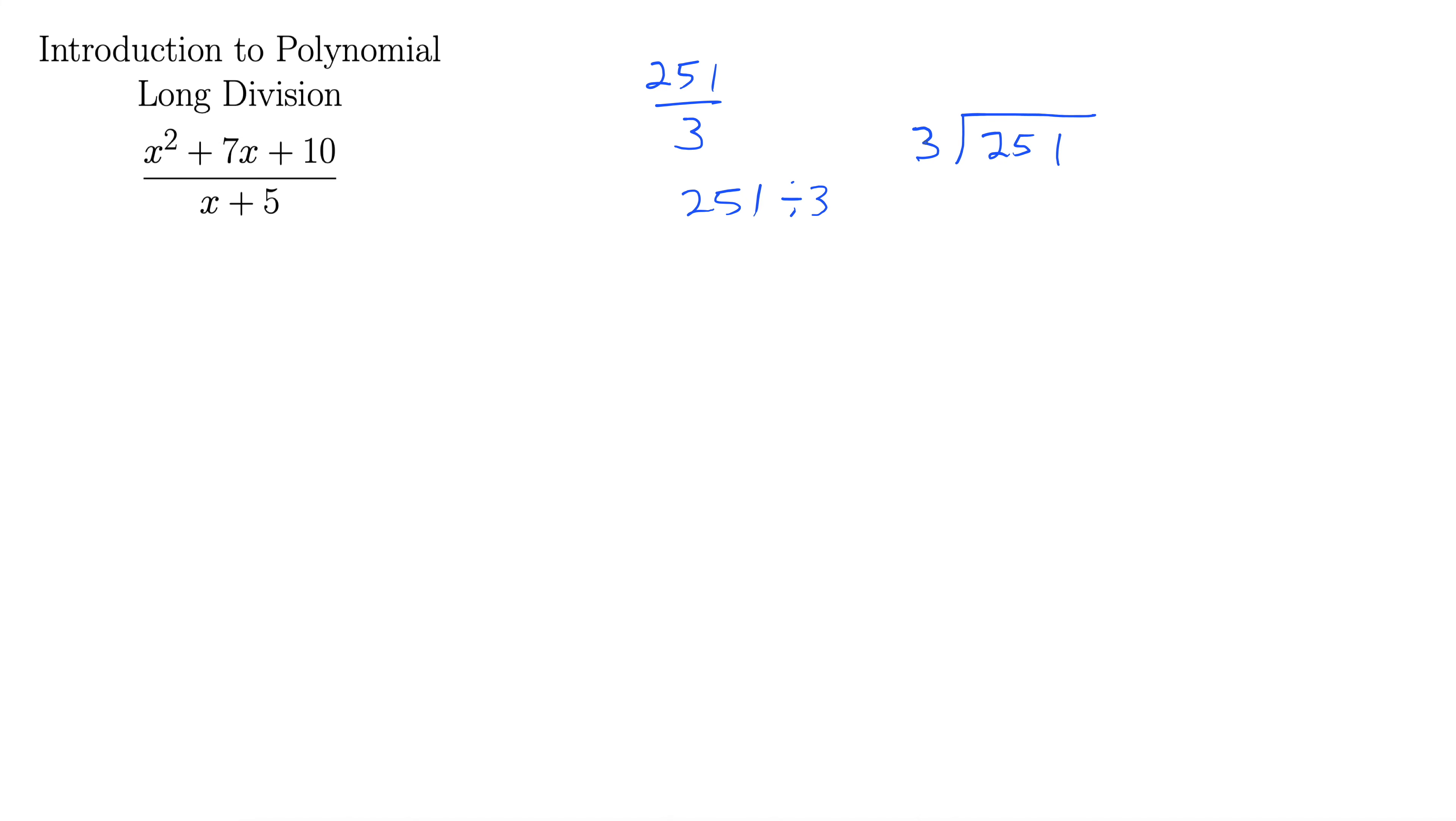We asked ourselves, how many times does 3 go into 2? Well, it doesn't. It's too big. So then we moved over here. How many times does 3 go into 25 without going over? Well, it goes in 8 times. So we'd put an 8 up here, and we'd say 8 times 3 is 24. We subtract those off. That gives us 1, and then we bring down this 1.